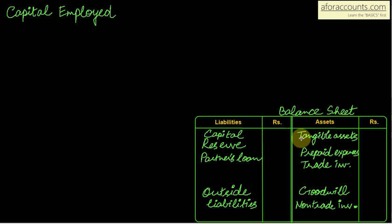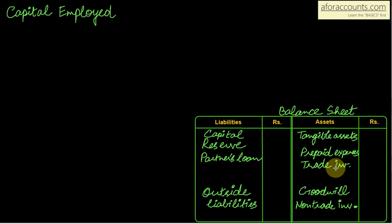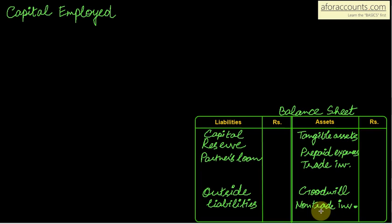So if this is your balance sheet, your tangible assets, prepaid expenses, and trade investments — if nothing has been said about investments, take them as trade investments. From that, subtract your outside liabilities. Reserves and partners loan are to be excluded, and goodwill and non-trade investments are also to be excluded.